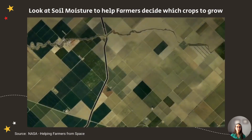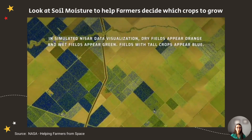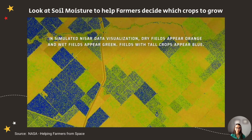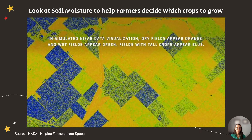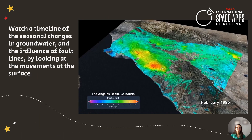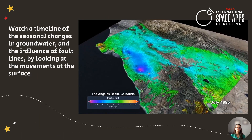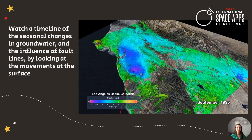But SAR isn't just useful for natural disasters — it can also help communities better understand and manage their resources. For example, SAR data can help farmers improve their crop yield by looking at ground properties like soil moisture. It can even help monitor groundwater reservoirs by looking at surface movements, like here in the basin of Los Angeles in California.